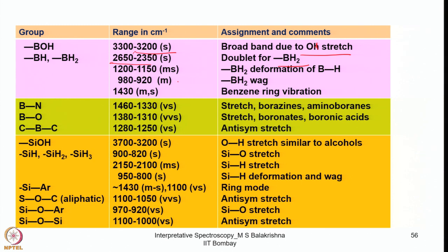These are assigned respectively to B–H₂ deformation, B–H wag, and benzene ring vibration. For B–N, a band appears in the region 1460 to 1330 cm⁻¹ as a very strong stretch for boroxines and aminoboranes. B–O shows a band at 1380 to 1310 cm⁻¹ (very strong stretch) for boronates and boronic acids. C–B–C at 1280 to 1250 cm⁻¹ is the anti-symmetric stretch.